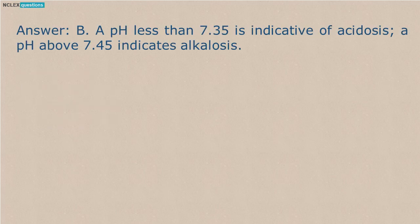A pH less than 7.35 is indicative of acidosis; a pH above 7.45 indicates alkalosis.